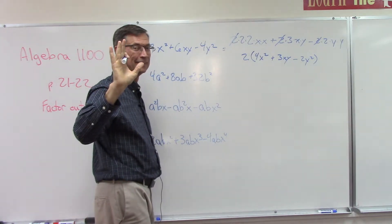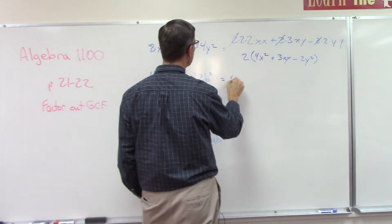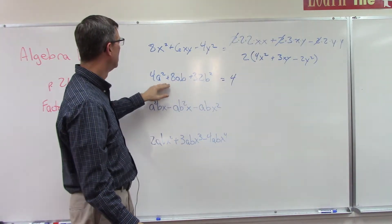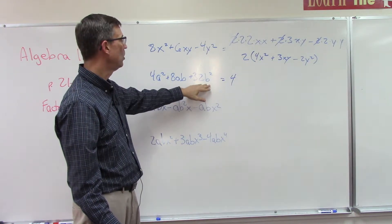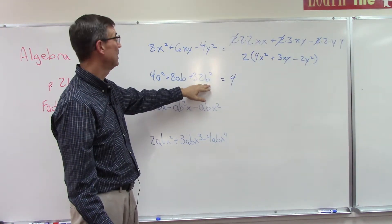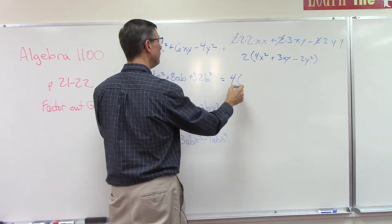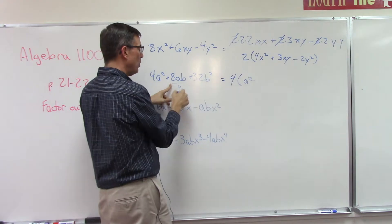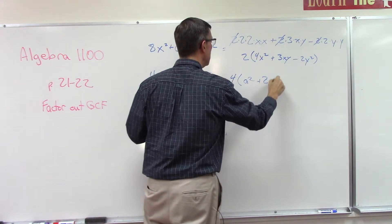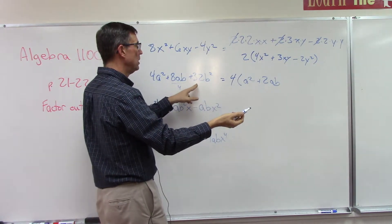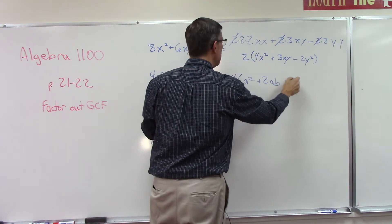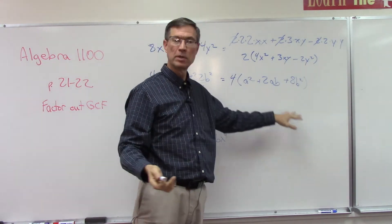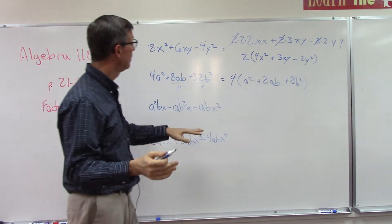4 — good. So let's factor out 4. Now do all of these have an a? Do they all have a b? They don't all have an a and they don't all have a b, so we can't factor out a or b. What we're left with is: 4a squared divided by 4 gives a squared; 8ab divided by 4 gives 2ab; 32b squared divided by 4 gives 8b squared. We're done — we don't have to do anything else with this right now.